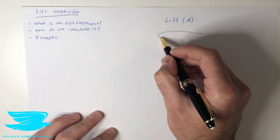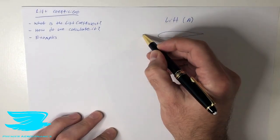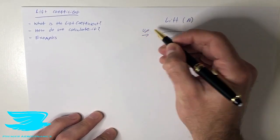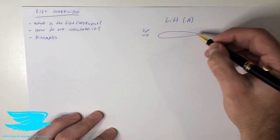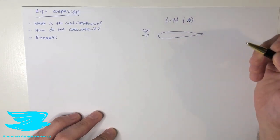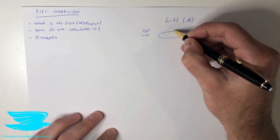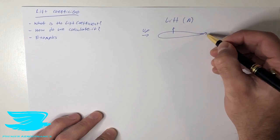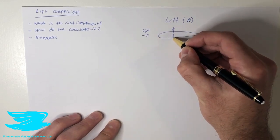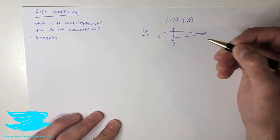So let's say we have an object here, and we have a freestream flow coming in, u infinity. And we have this object producing some sort of force. Now, there is a force going up, and there is a force going back. There is also gravity pulling this thing down, so there's g.